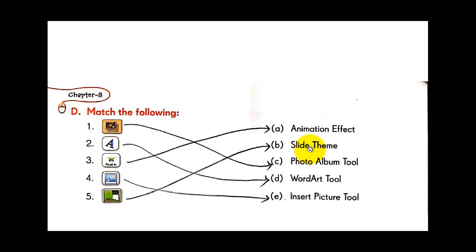In the next video session class we will do chapter number nine — Algorithms and Flowcharts. For today, let's end our class here. Students, stay home, stay safe, and stay healthy. For the exercises we have done, you can fill them up in your textbook on pages 96, 97, and 98. I'll send you the PDF file and upload it to Google Classroom with textual exercises and question answers.